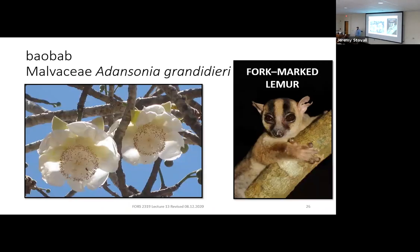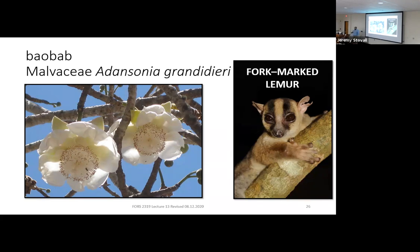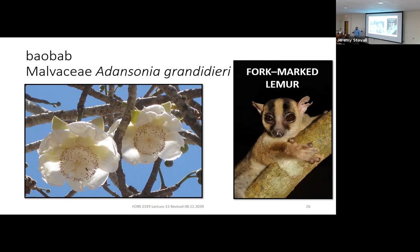This baobab actually flowers at dusk and releases pollen at night, because it's pollinated by the fork-marked lemur — a nocturnal animal. Lemurs go after the nectar, get pollen on them, and spread it to other flowers. The tree releases a large, heavy-seeded fruit that appears set up for wildlife dispersal, but none of today's lemurs or animals on Madagascar seem big enough to disperse these seeds. It's mostly dispersed by water now, and the primary disperser may have gone extinct. This is our only lemur-pollinated tree of the semester.